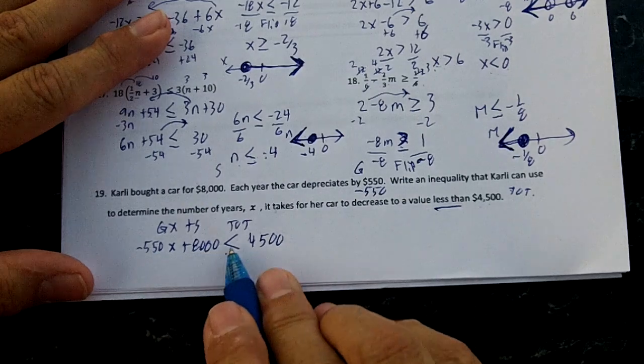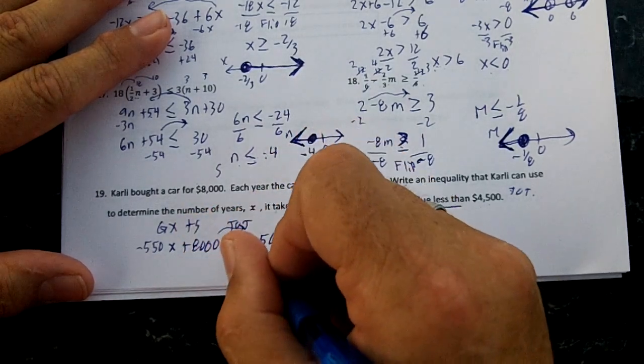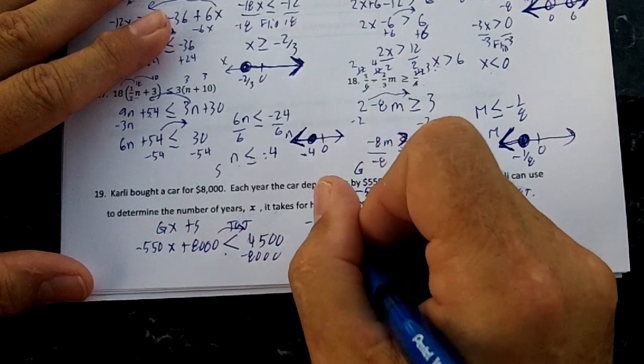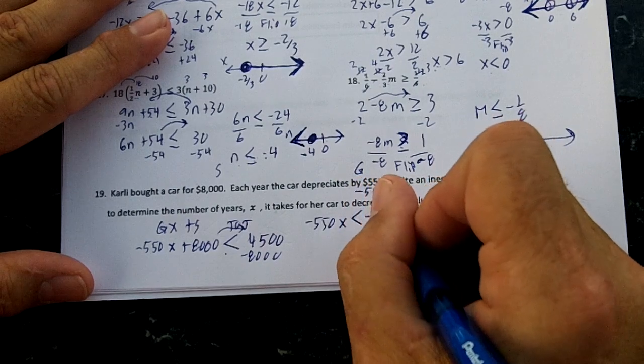So we want the cost of the car to be less than $4,500. We're going to move over the $8,000, and I'm going to get negative $550X less than negative $3,500.